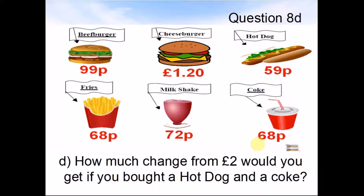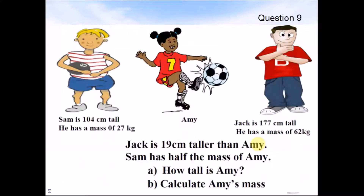Question 9. Sam is 104cm tall. He has a mass of 27kg. Jack is 177cm tall. He has a mass of 62kg. Jack is 19cm taller than Amy. Sam has half the mass of Amy. How tall is Amy? Calculate Amy's mass. Pause the video and work out the answers.